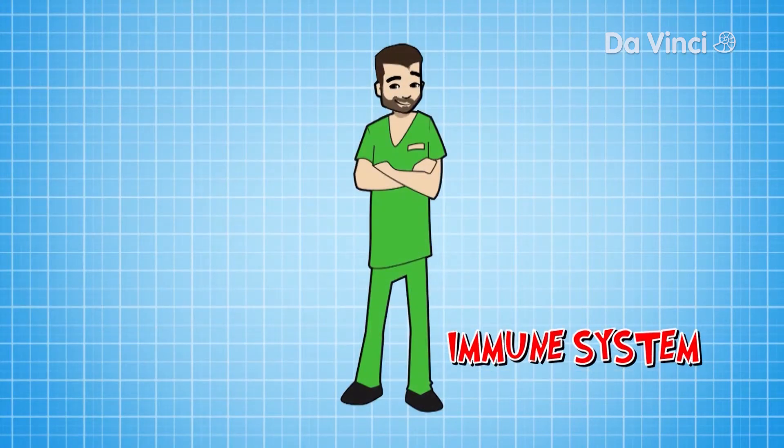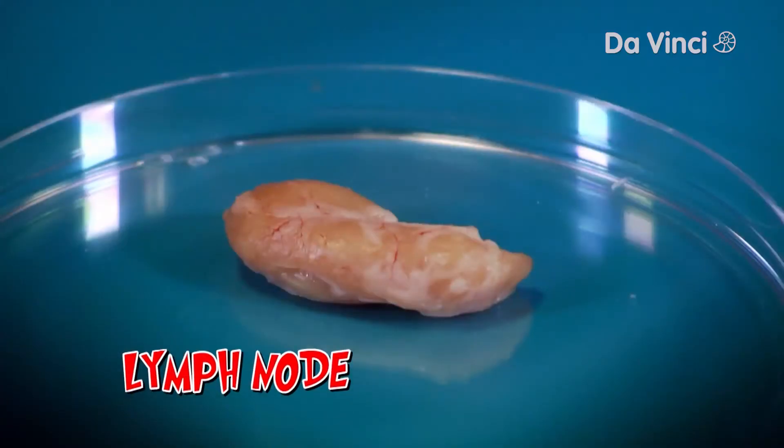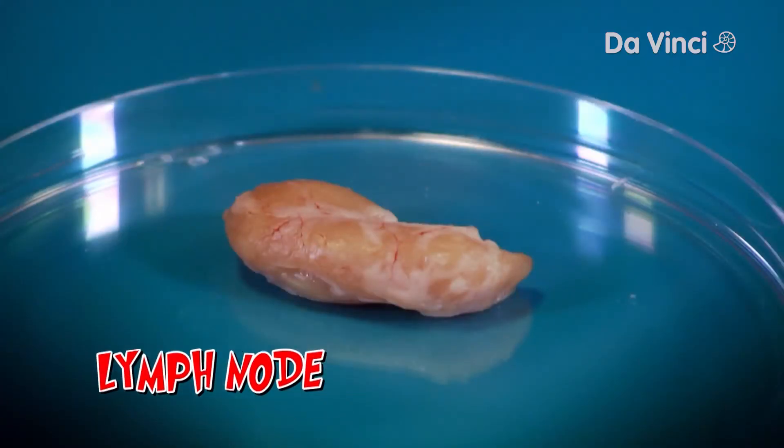Your immune system is a network of cells, tissues and organs that protect your body from infection, and this is a lymph node, a really important part of that network.